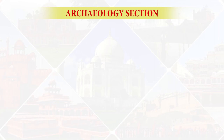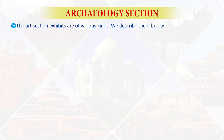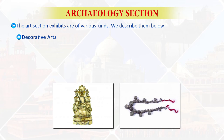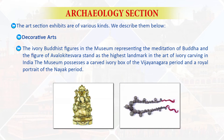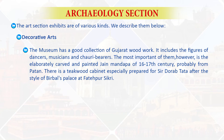Next is the art section. The art section exhibits are of various kinds. First, decorative arts: the ivory Buddhist figures in the museum — representing the meditation of Buddha and the figure of Avalokiteshvara — stand as the highest landmark in the art of ivory carvings in India. The museum also possesses a carved ivory box of the Vijayanagara period and a royal portrait of the Nayak period. It has a good collection of Gujarat woodwork, including figures of dancers, musicians, and chauri bearers.